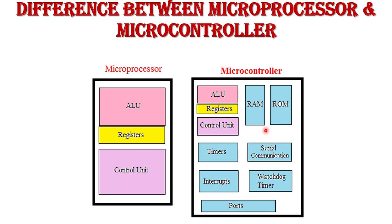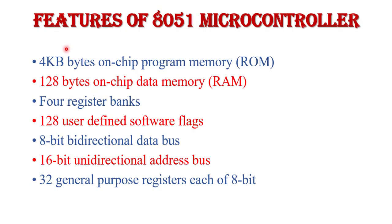Now, the features of the 8051 microcontroller. The 8051 is an 8-bit microcontroller — 8-bit is the word length, meaning it can fetch, execute, and operate on 8-bit data at a time. It has 4 kilobytes of on-chip program memory (ROM), 128 bytes of on-chip data memory (RAM), 4 register banks, 128 user-defined software flags, an 8-bit bi-directional data bus, and a 16-bit unidirectional address bus.